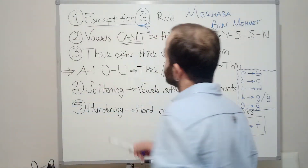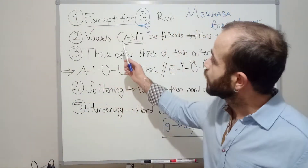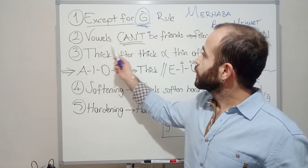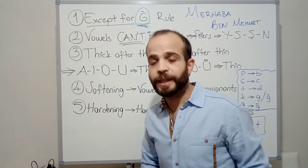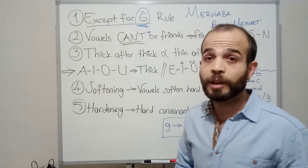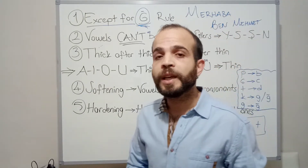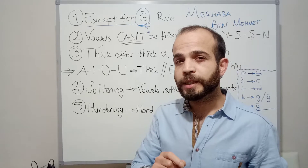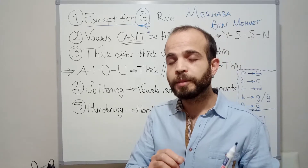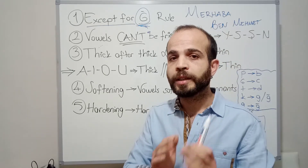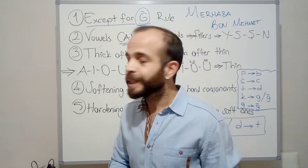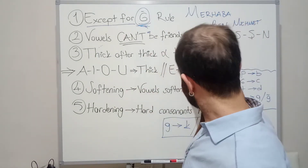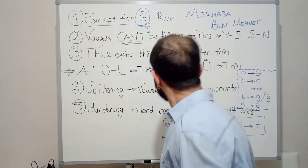The second rule is: vowels cannot be friends. Vowels cannot be friends, which means in Turkish, two vowels cannot come right next to each other. We always need something in between like a vowel plus a consonant plus a vowel.